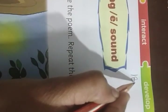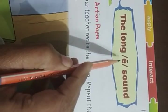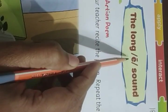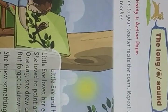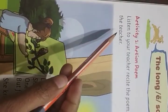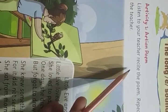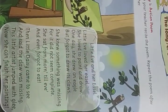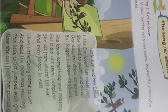Firstly, write down the date on the top: 18th, 1, 2021. We are going to learn about sound E. This is the first activity which has a rhyme, but I am going to leave this because the rhyme is too long for you. So we will not do the rhyme — just leave it.